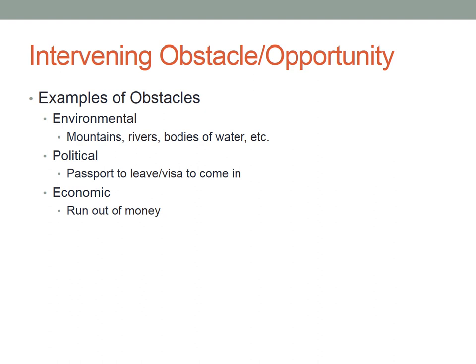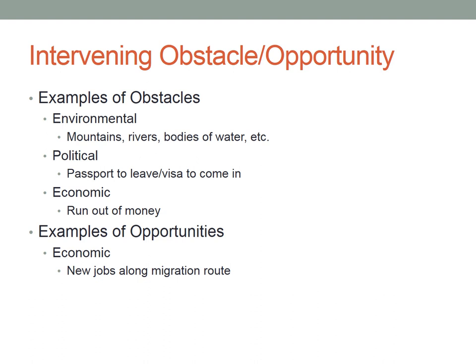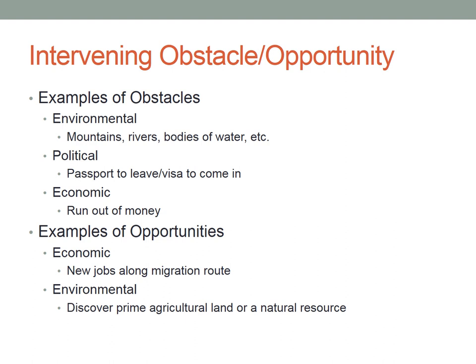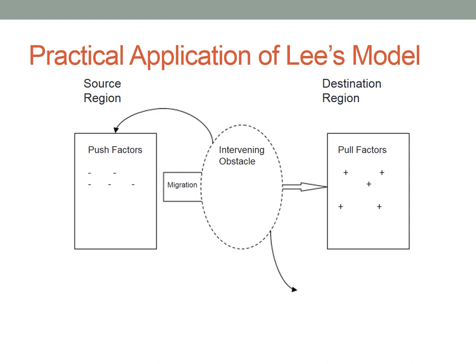We've covered environmental, political, and economic obstacles — there are others that fit with ESPN-DC. As far as opportunities go, economically there could be new jobs along the way — I'll give an example of that on the next slide. Environmentally, you might come across raw materials, a natural resource, or really great farmland and decide this is a spot to stay. Or culturally, moving to an area with an ethnic enclave. Recall from an earlier slide — what type of migration might lead to the creation of ethnic enclaves? A group of people of the same nationality or background.